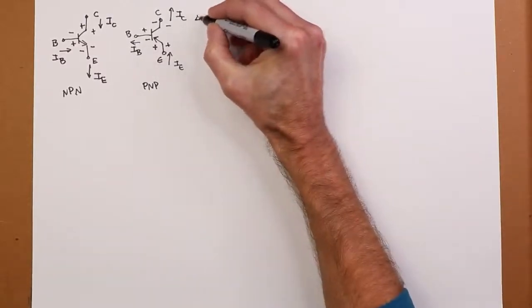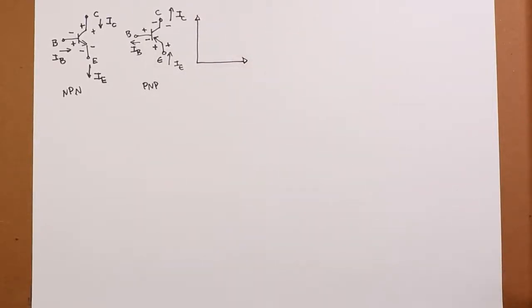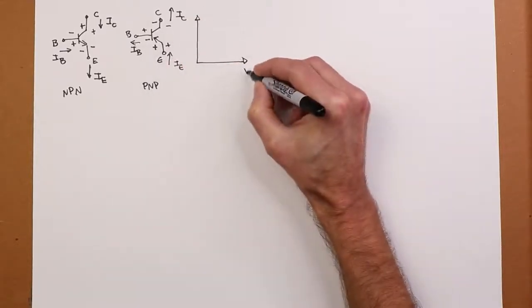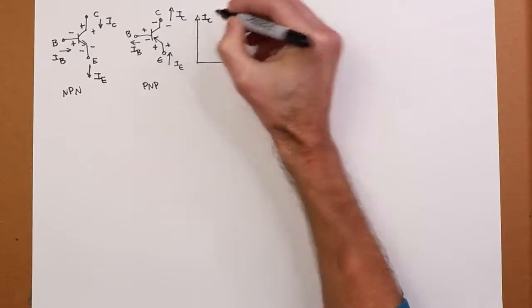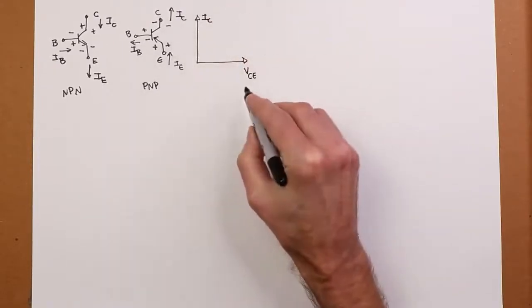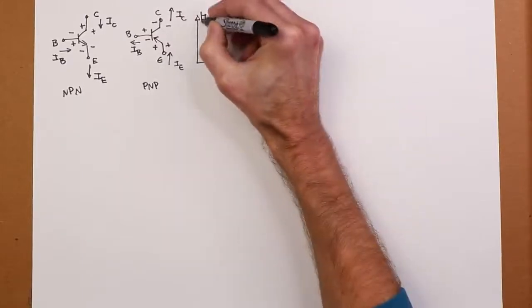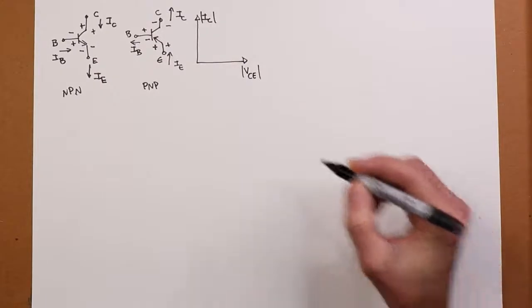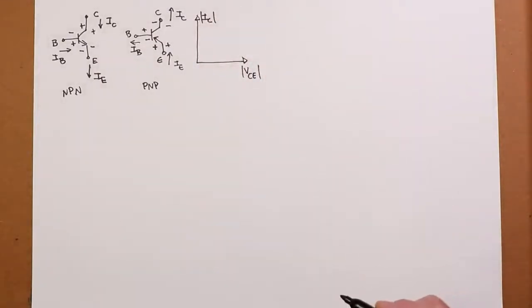And for things like load lines, very often what we will do is we'll still draw first quadrant. In other words, VCE and IC. These would be negative. Sometimes you'll see VEC. But more often, it's just sort of assumed that you're looking at an absolute value. So we'll draw load lines or curves or what have you.